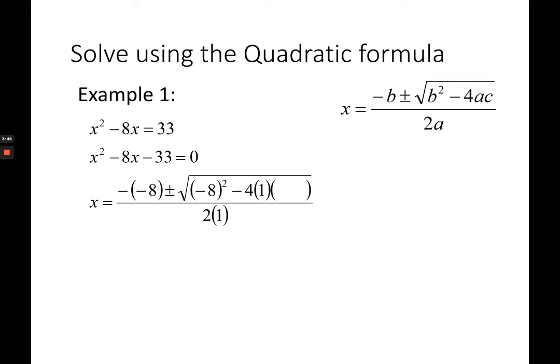And then you evaluate further. Negative 8 double minus is actually going to become positive 8. And then your negative 8 here becomes positive 64. 4 times 3 is actually 12 plus 12.